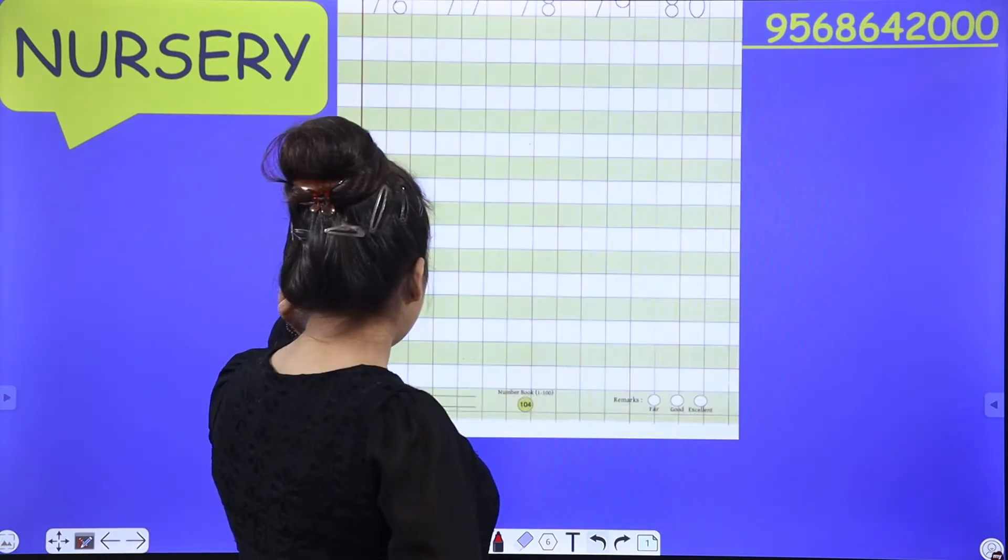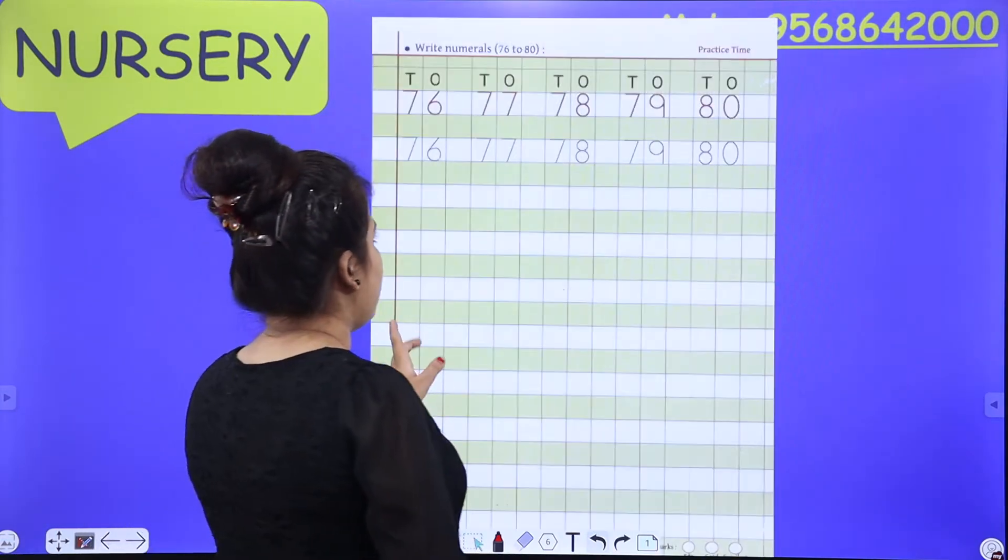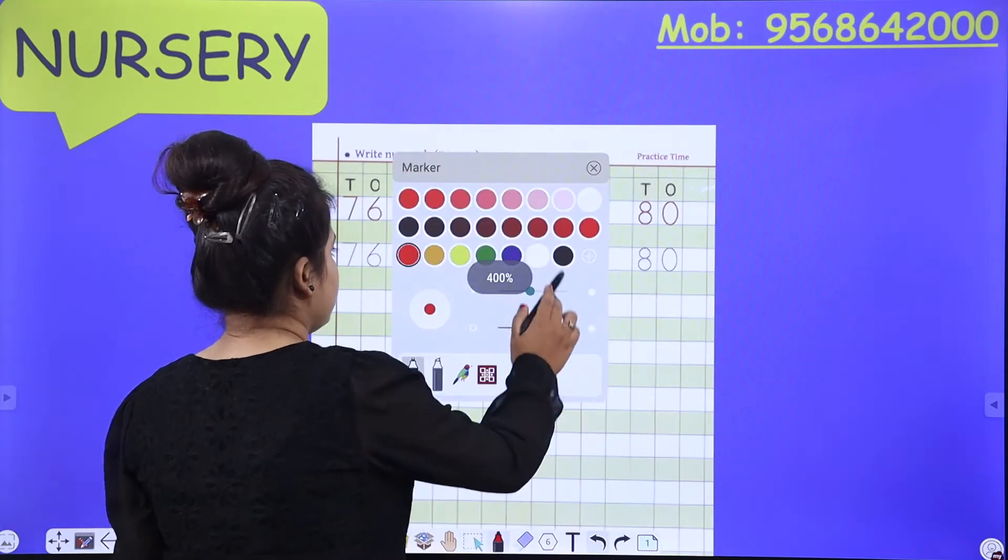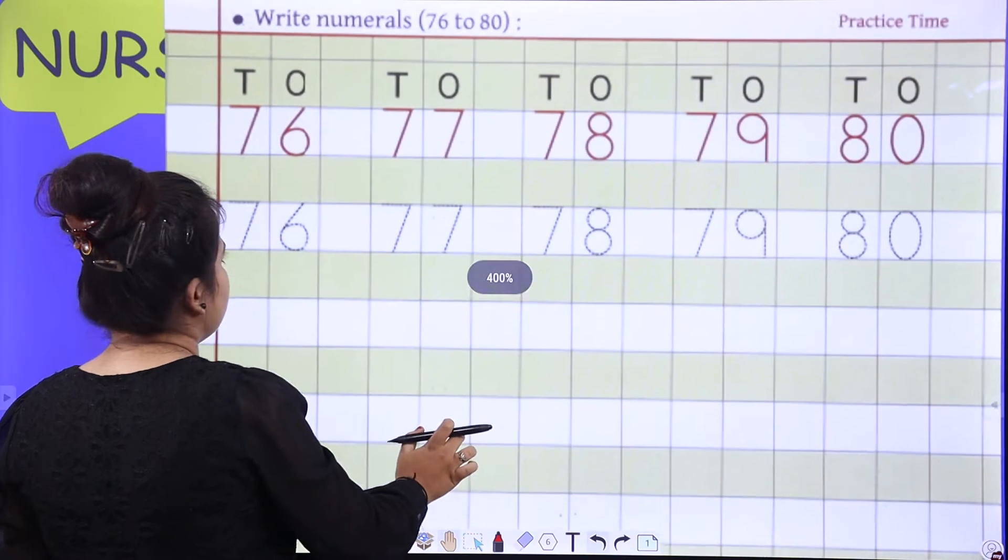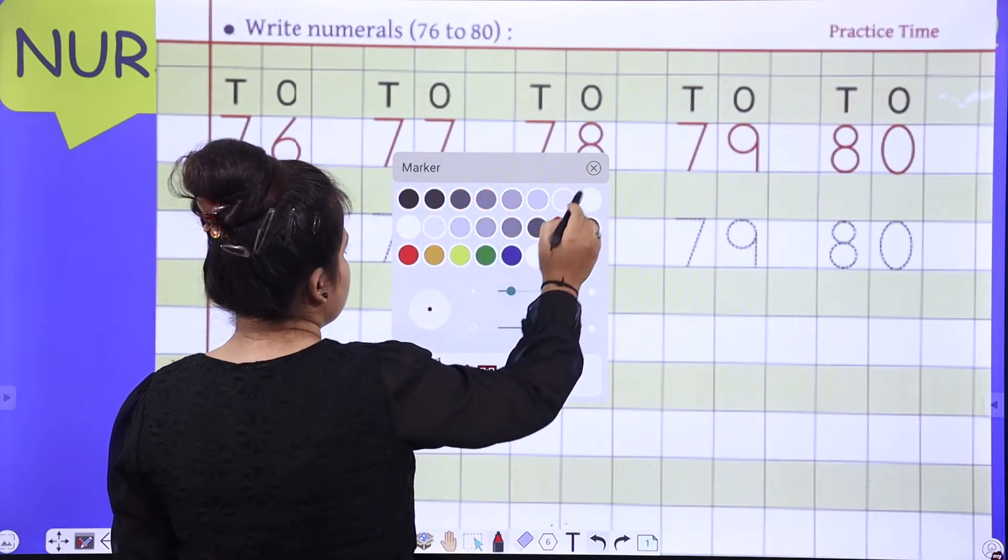Let's start with the tracing now. So let's do tracing. First number is 76, 76.